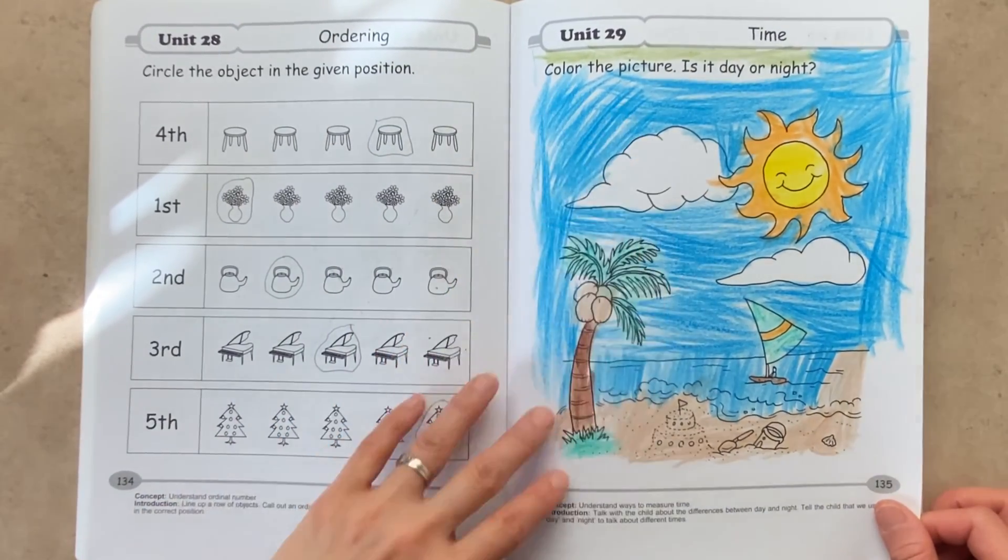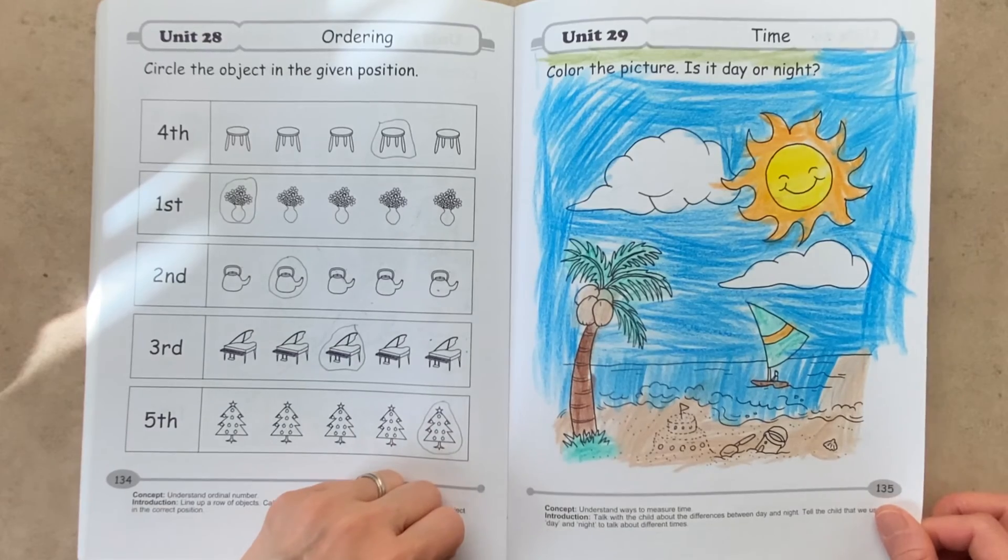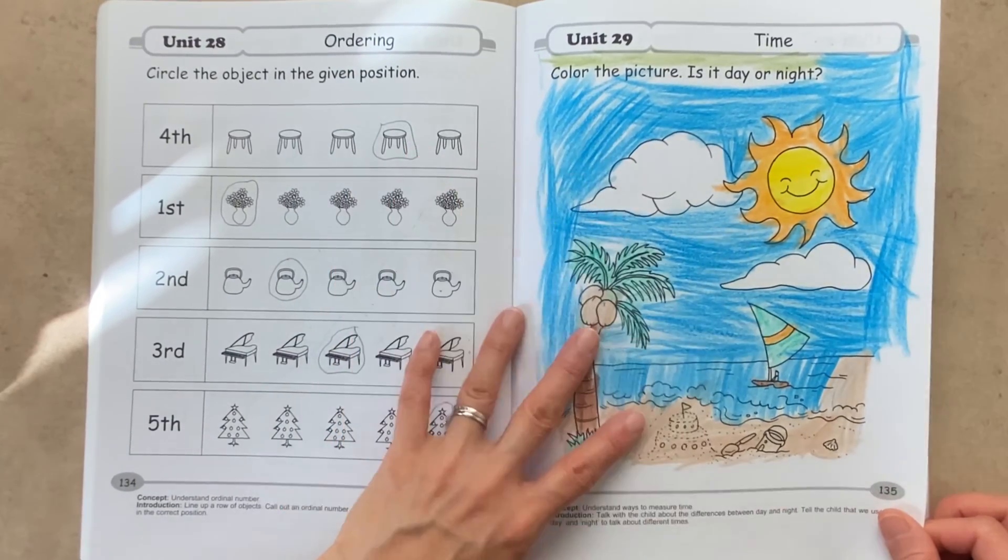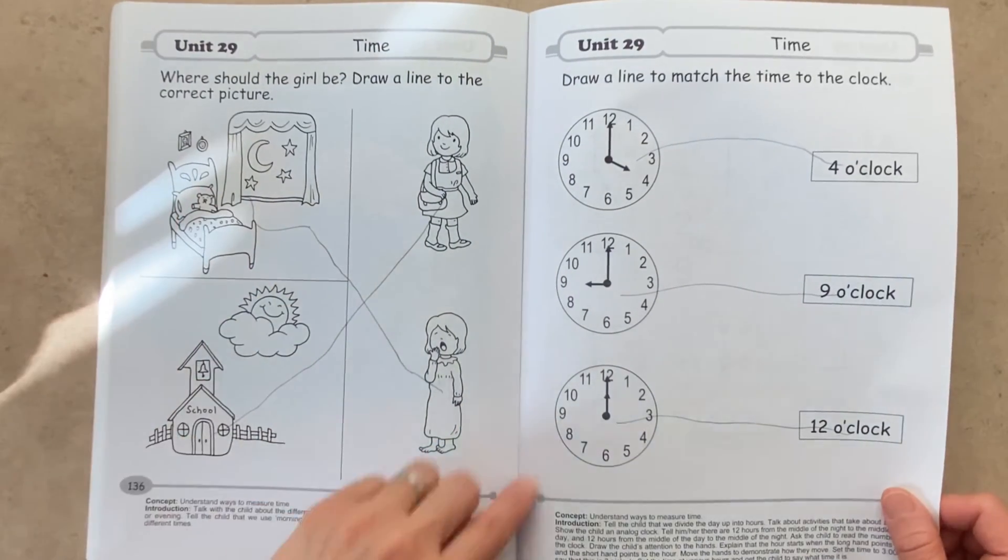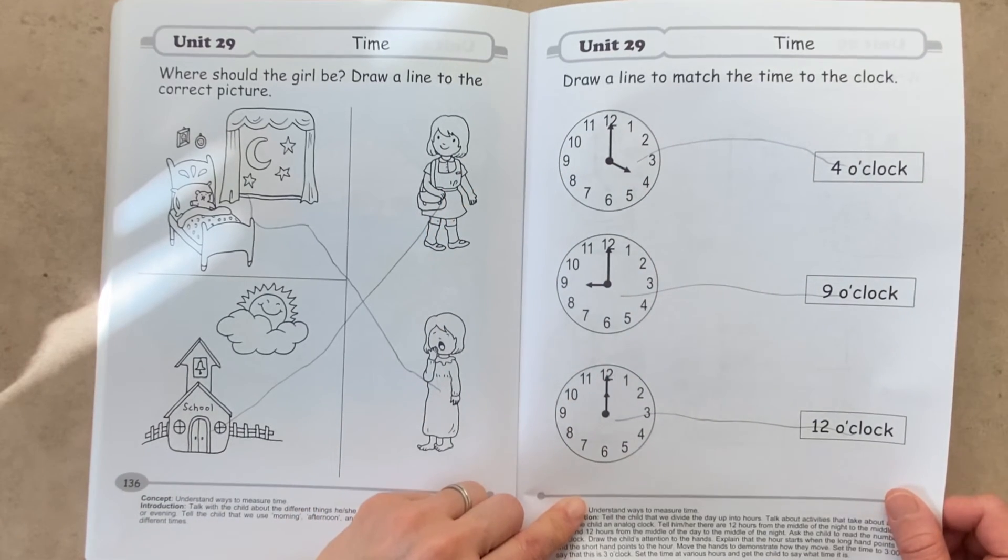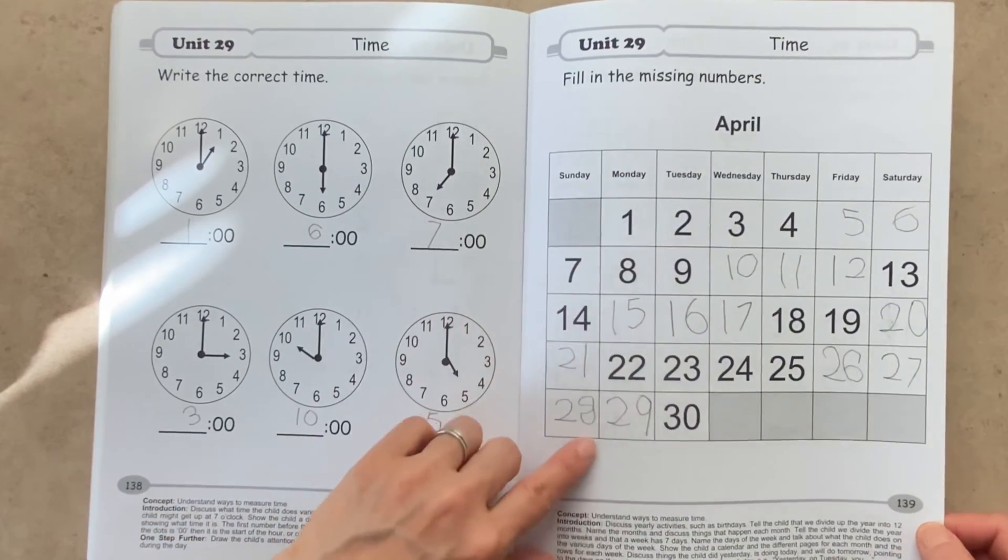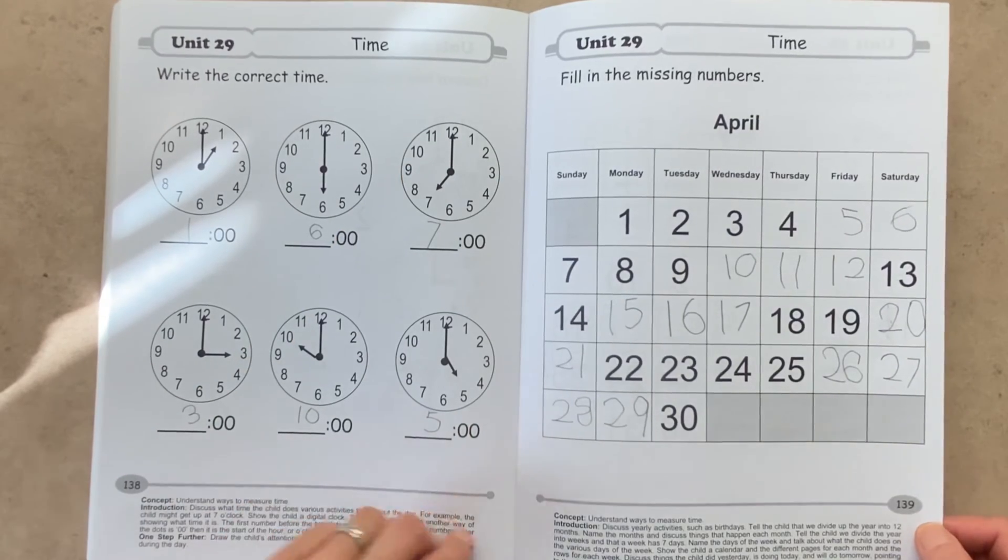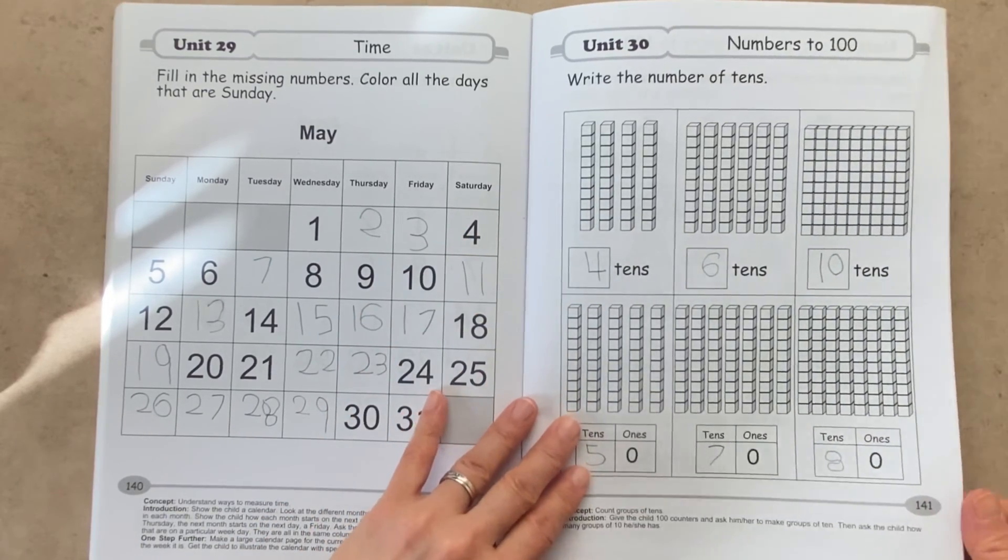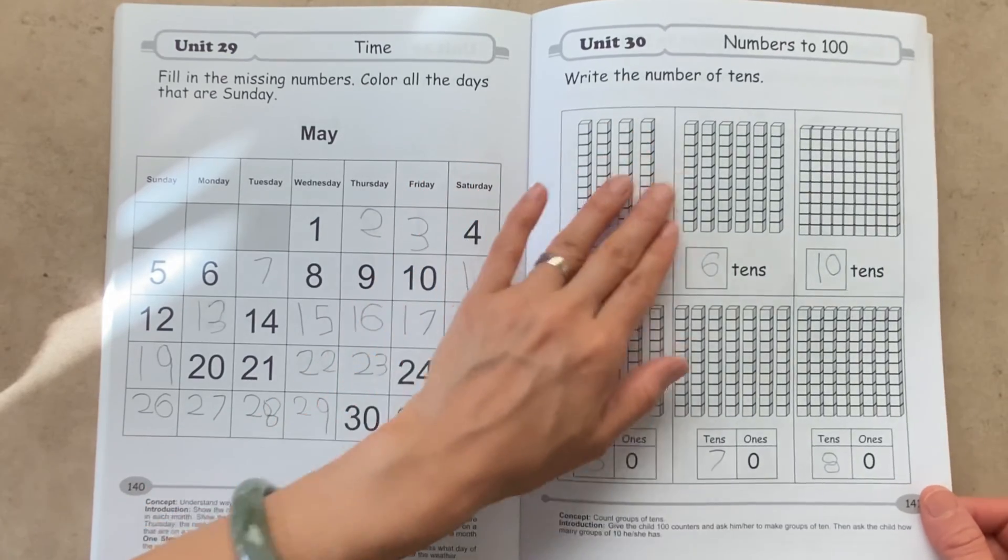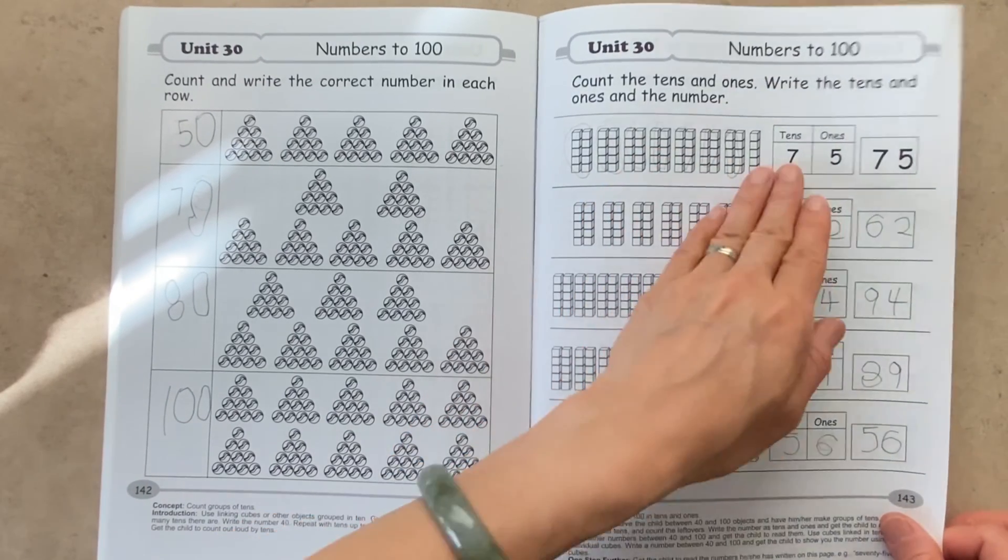Okay, now unit 29 is about time. So kids get to color this page and decide, is it day or night? So we're introducing the concept of time by coloring this page. More recognition of day and night. And here are clocks, obviously, to represent time. And on page 139, another way to represent time is by showing your calendar. And now here in unit 30, we are now talking about numbers up to 100. And we have a lot of these 10s counters. We're breaking up into 10s and 1s again.